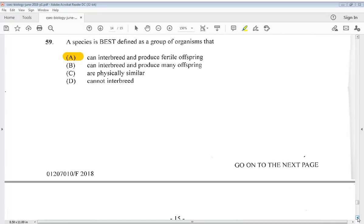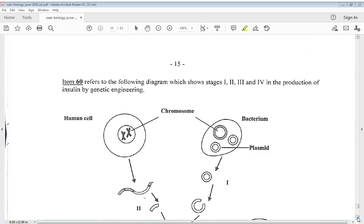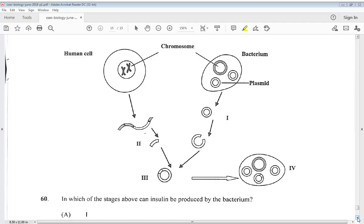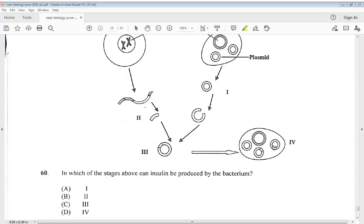It's the final question now. Item 60 refers to the following diagram which shows stages 1, 2, 3, and 4 in the production of insulin by genetic engineering. In which of the stages above can insulin be produced by the bacterium? Is it at 1? Is it at 2? Is it at 3? Or is it at 4? So we know it is at 4. So the answer would be D. So there we have it. We have completed the entire CSEC Biology May-June 2018 Paper 1. Thank you so much for watching.